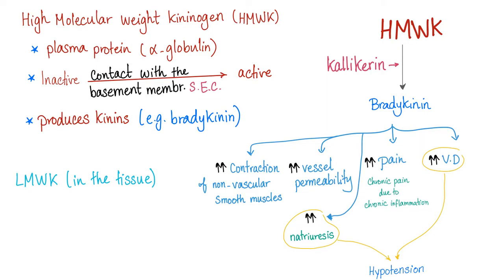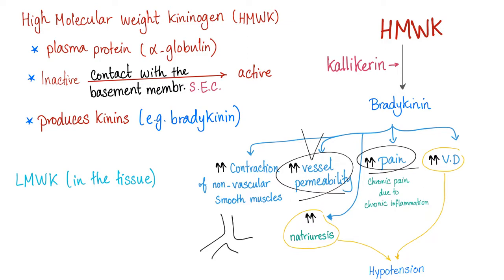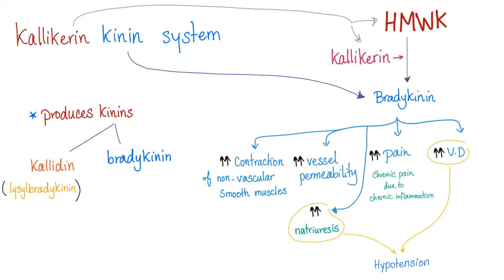What happens when high molecular weight kininogen is converted into bradykinin thanks to plasma kallikrein? You have contraction of non-vascular smooth muscles such as your bronchioles and bronchi, increased pain due to inflammation, increased vasodilation, and natriuresis and vasodilation will lead to hypotension. That's why we call this the kallikrein-kinin system.